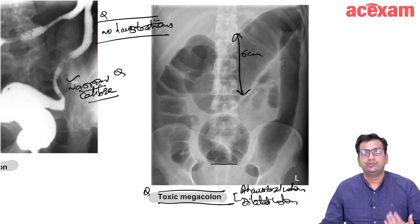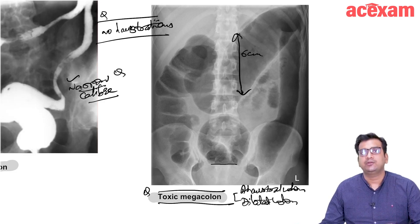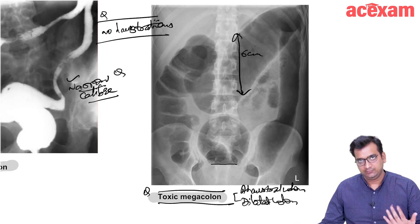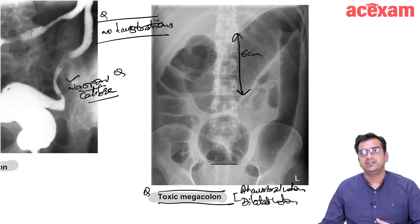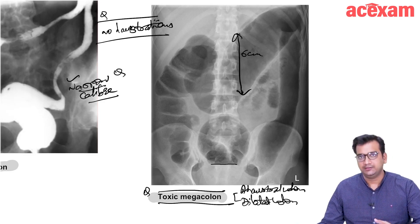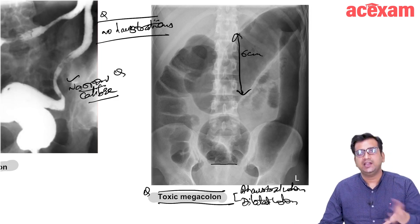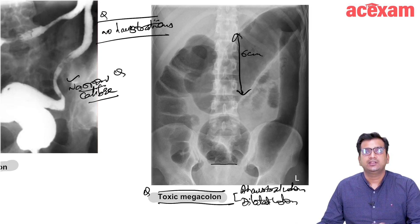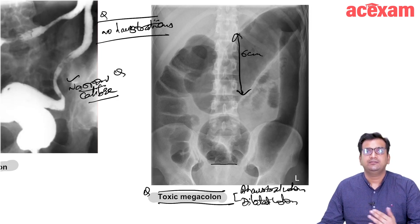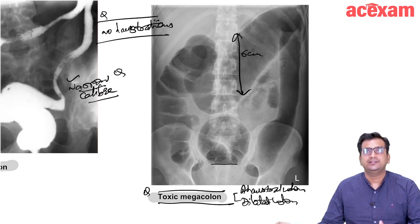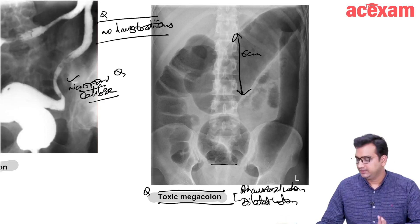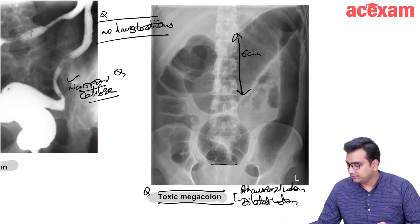So we will have to remove or we have to perform total abdominal colectomy with end ileostomy and we will preserve the rectum. Then proctectomy and ileal pouch anal anastomosis, we are not going to perform in this setting. We will perform in the next setting once the sepsis resolves. So this is about toxic megacolon.